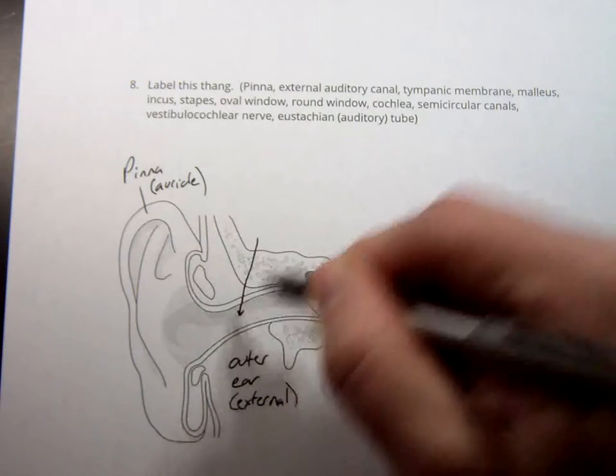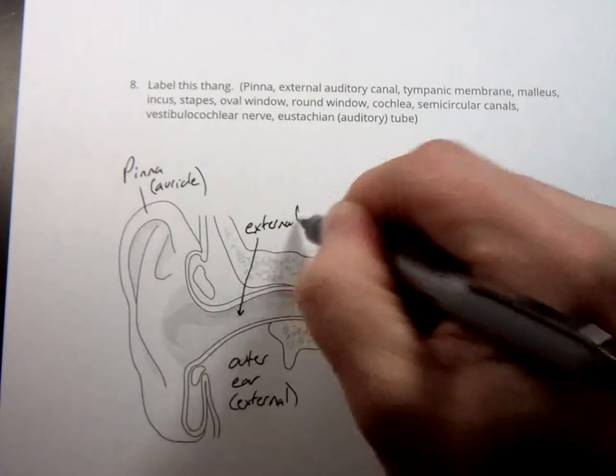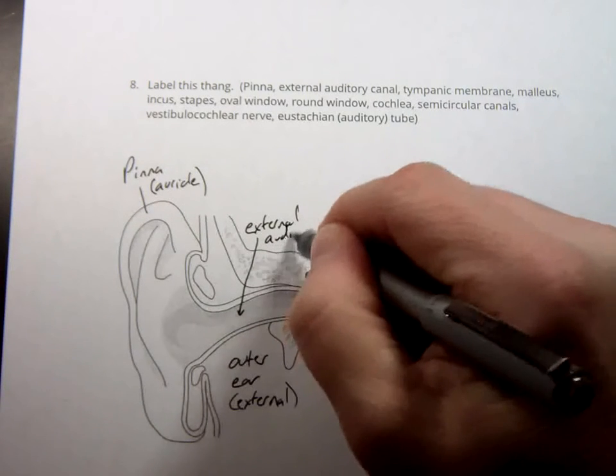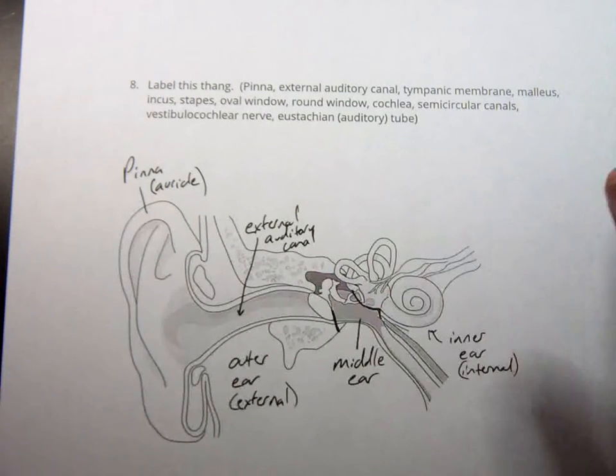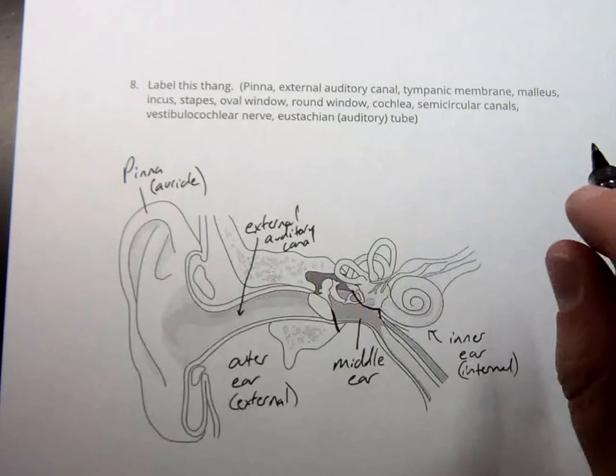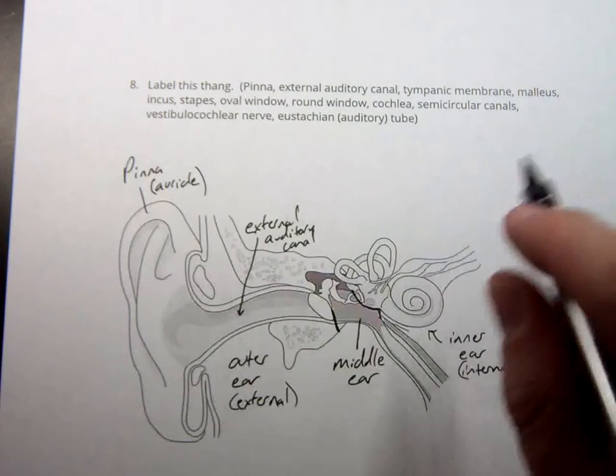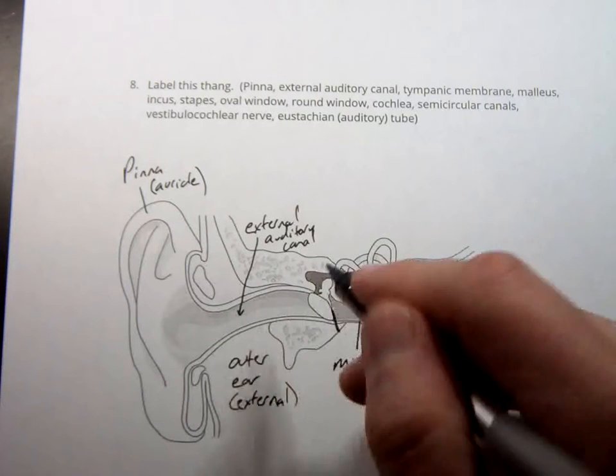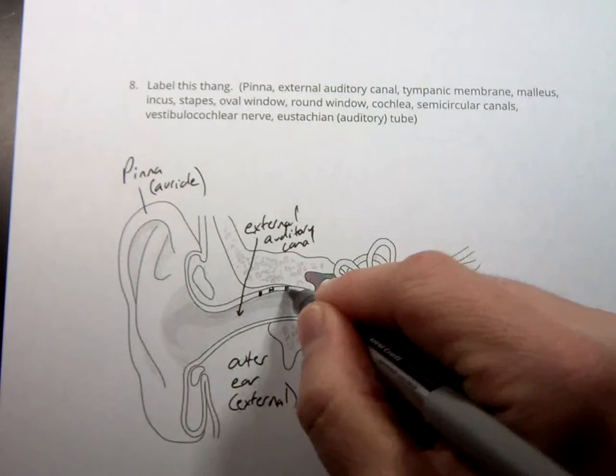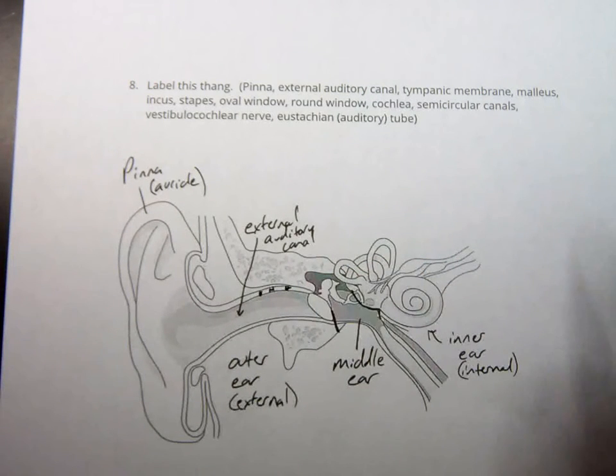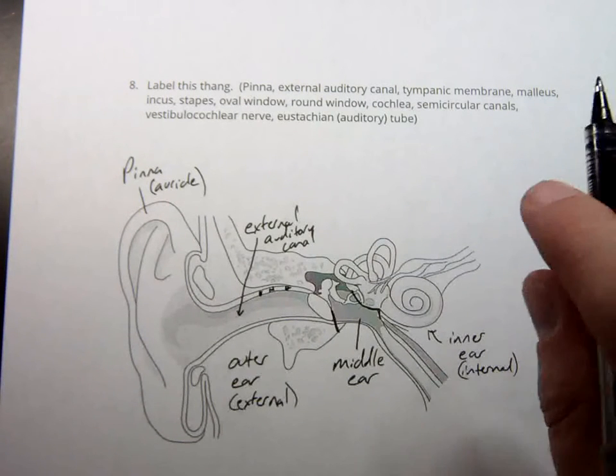This passageway right here is called the external auditory canal. From your Anatomy 1 class with me, also called the external auditory meatus in the skull. Also called the external acoustic canal. Any of those are fine. The channel is the sound in this way and it's lined with these little glands in here called ceruminous glands. And what do ceruminous glands make? Wax.